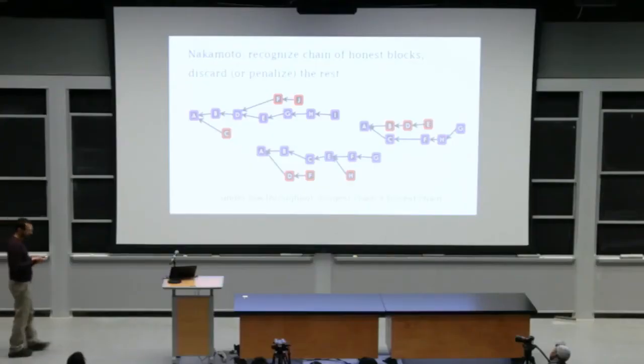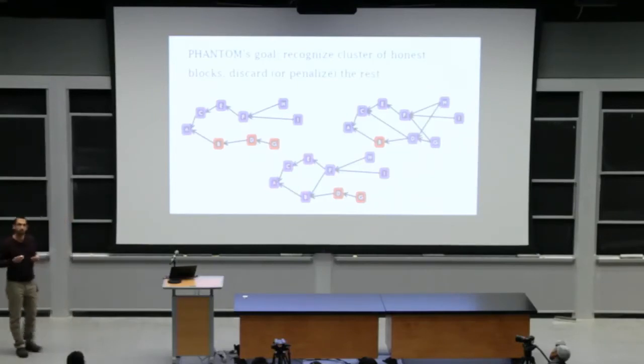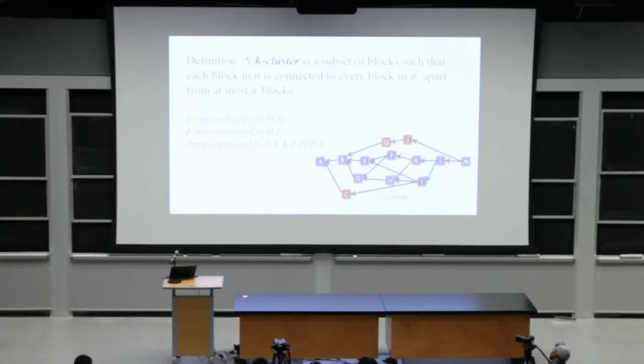And this works when the network propagation delays negligible. And we want to generalize it and we want to say, okay, so in general in dags, how will this look like? How was Satoshi's paradigm generalized to dags?